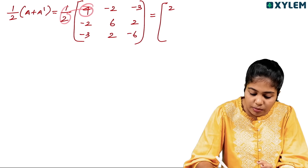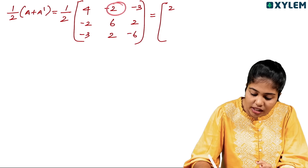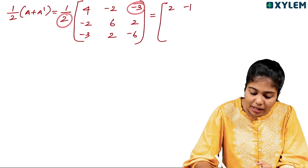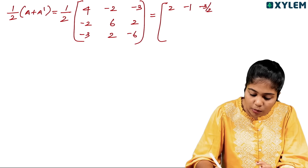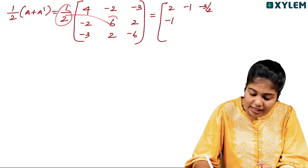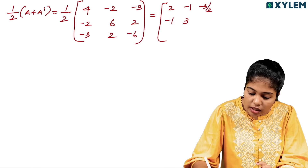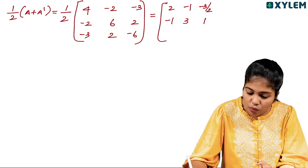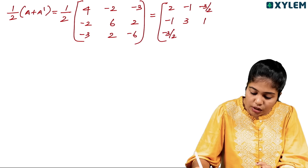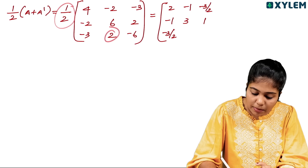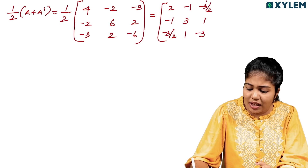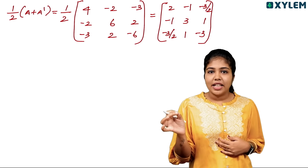Multiplying each element by 1/2: minus 2 divided by 2 is minus 1; minus 3 into 1/2 is minus 3/2; 1/2 into minus 2 is minus 1; 1/2 into 6 is 3; 1/2 into 2 is 1; 1/2 into minus 3 is minus 3/2; and minus 6 gives minus 3/2. All elements multiplied by half.